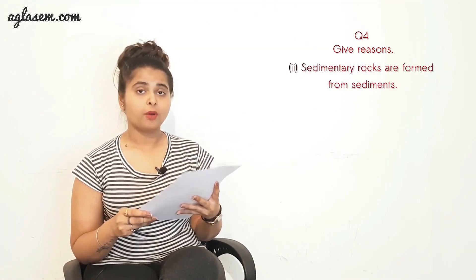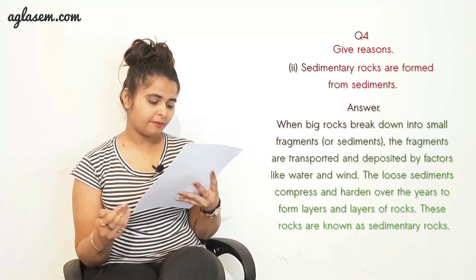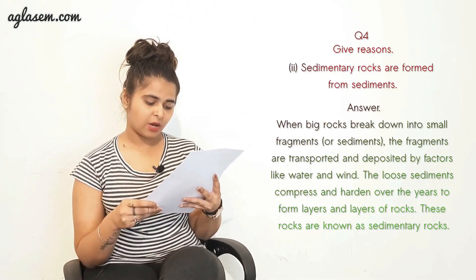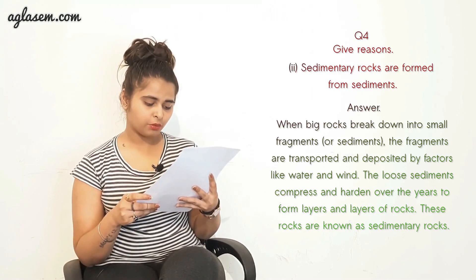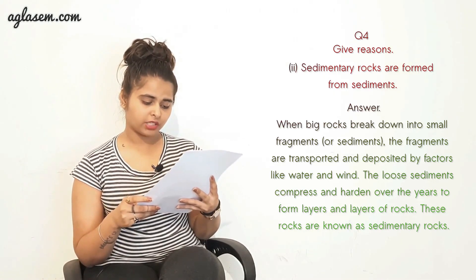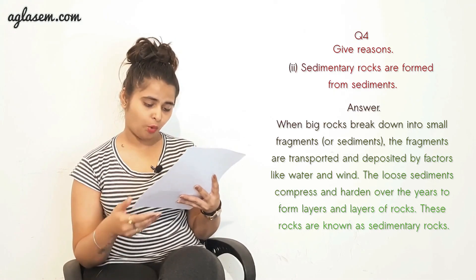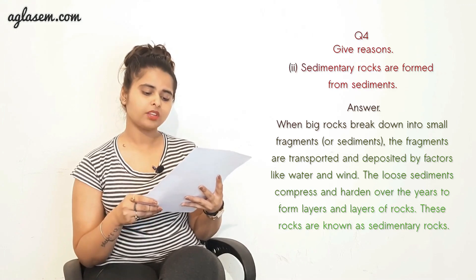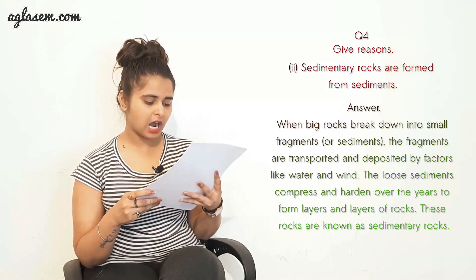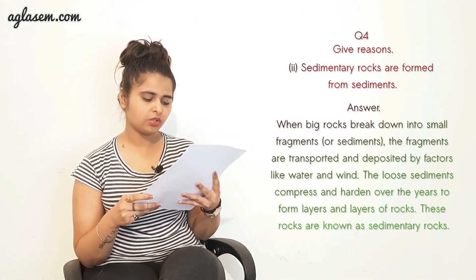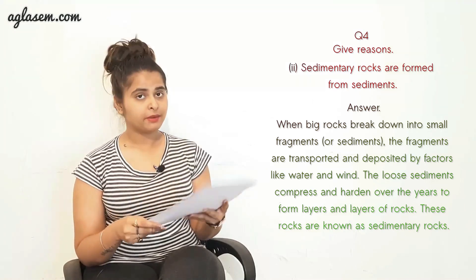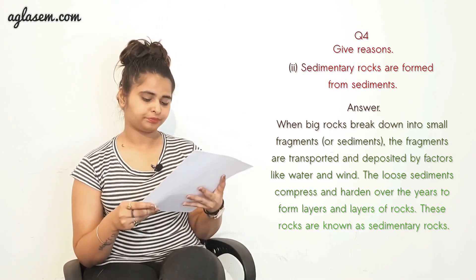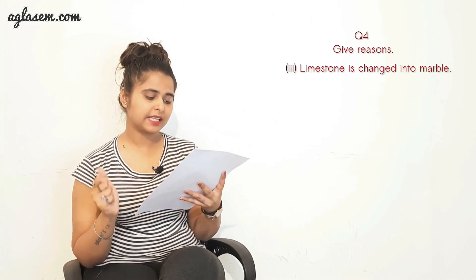Part two: Sedimentary rocks are formed from sediments. When big rocks break down into small fragments or sediments, the fragments are transported and deposited by factors like wind and water. The loose sediments compress and harden over the years to form layers and layers of rock. These rocks are known as sedimentary rocks.